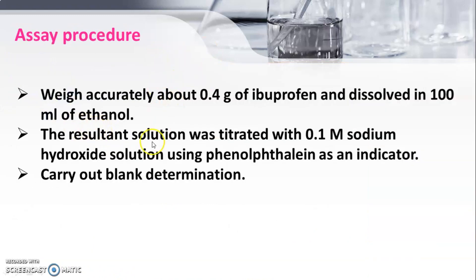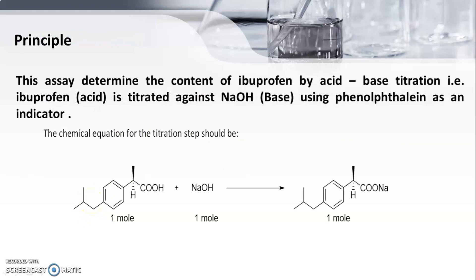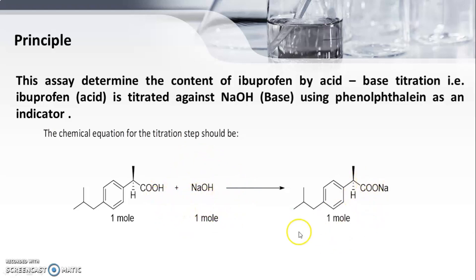The assay procedure: accurately weigh about 0.4 gram of ibuprofen and dissolve in 100 ml of ethanol. The resultant solution is titrated with 0.1 molar sodium hydroxide solution using phenolphthalein as an indicator, and carry out a blank determination. The principle: determine the content of ibuprofen by acid-base titration — ibuprofen is acidic in nature and is titrated against NaOH, which is basic in nature, using phenolphthalein as indicator. The ibuprofen molecule reacts with NaOH; sodium gets attached and you get the salt of ibuprofen.